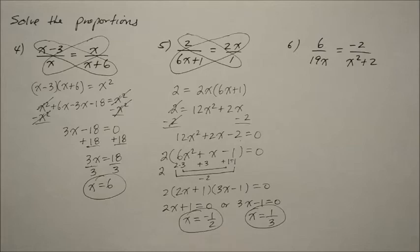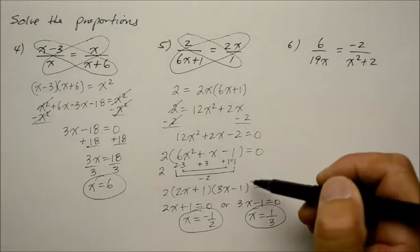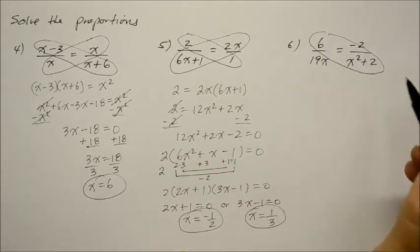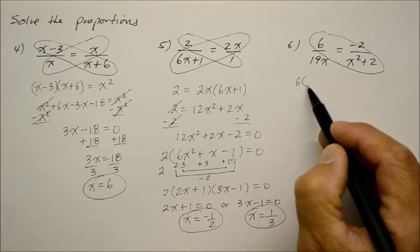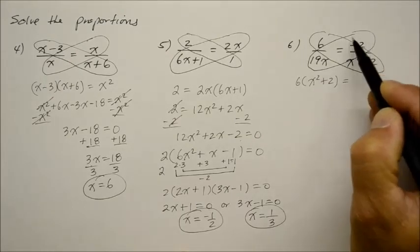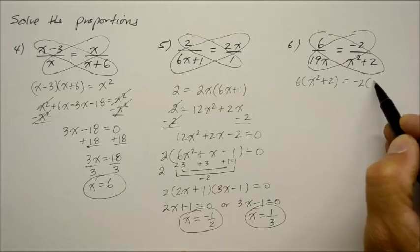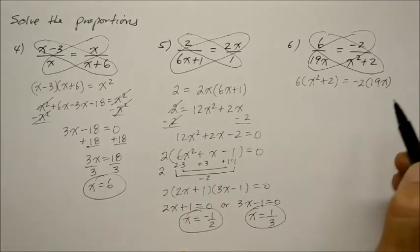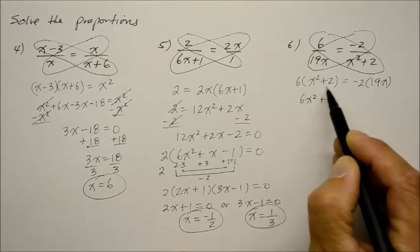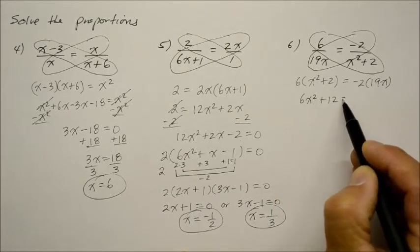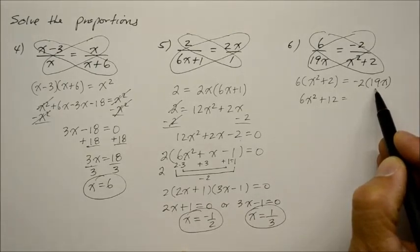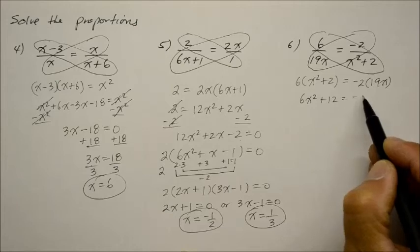And finally, number 6. It's not too bad, is it? We're going to multiply 6 with the x squared plus 2. And let's write that out. And that's going to equal the right side, where I multiply the negative 2 with the term 19x. Let's do my distributive property. 6x squared plus 6 times 2 is 12 on the left side. On the right side, negative 2 times 19 is what? What's that? 38. Double the 19 is 38. And it's negative.